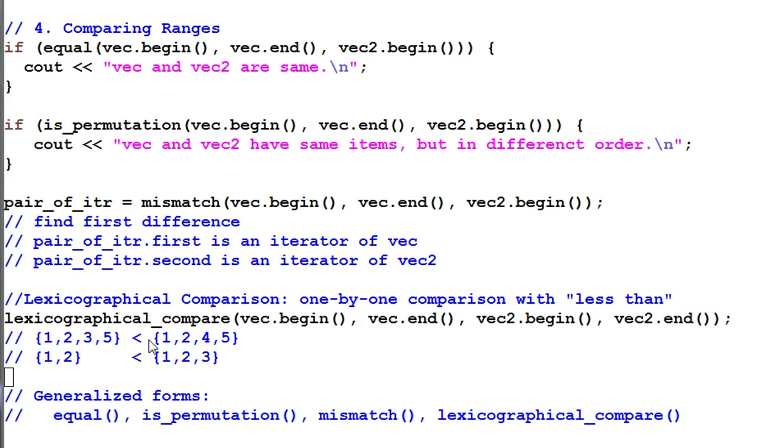So 1, 2, 3, 5 is less than 1, 2, 4, 5 because the first item of difference is 3 and 4 and 3 is less than 4. 1, 2 is less than 1, 2, 3 because 1, 2 has one less item. That is why it is less. All of the comparing algorithms have generalized form of the same name.